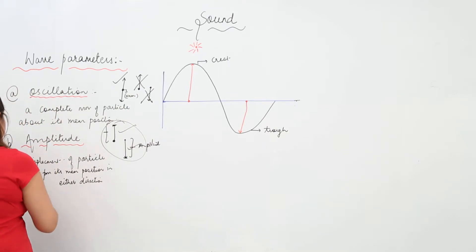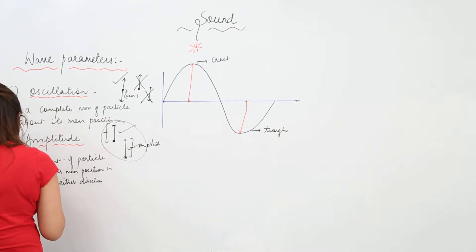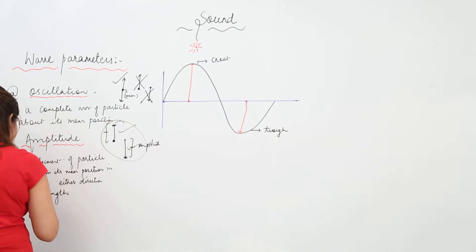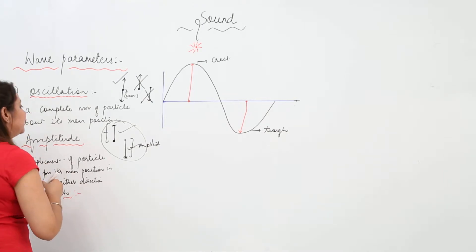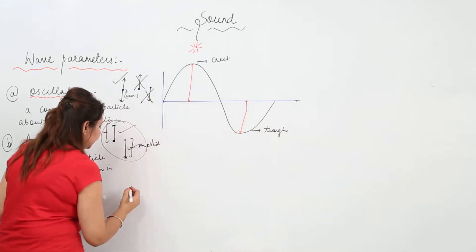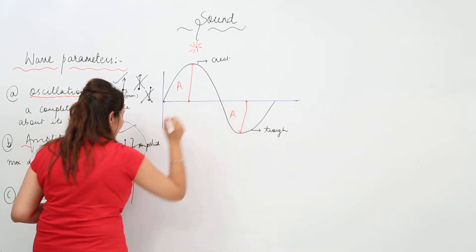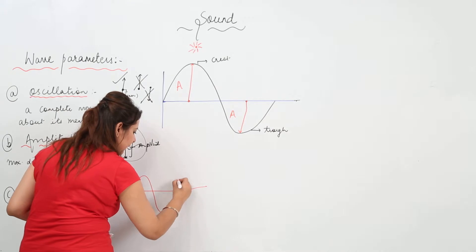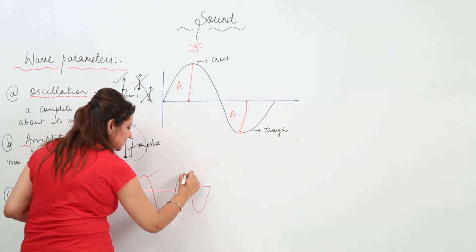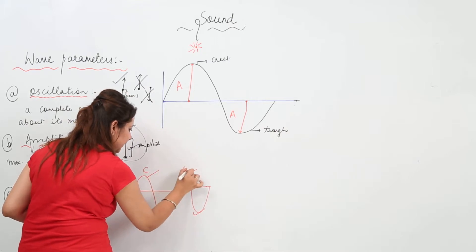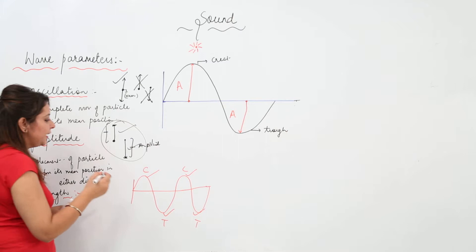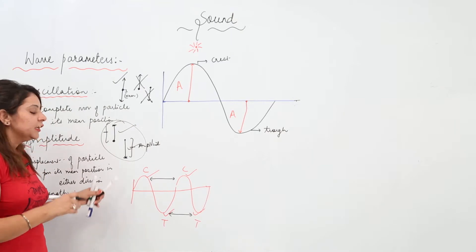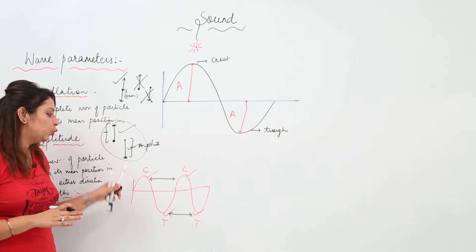The third parameter is wavelength. What is wavelength? Suppose this is one wave and this is another wave — this is a crest, this is a crest, this is a trough, this is a trough. The wavelength is the distance between two consecutive crests or troughs. You have to look at consecutive ones only — not any two crests, but consecutive ones.